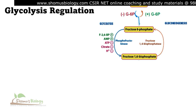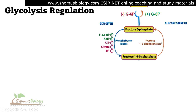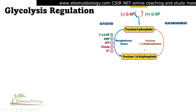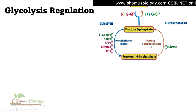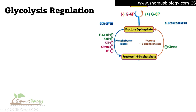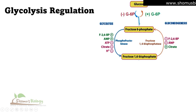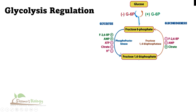On the gluconeogenesis side, the conversion from fructose-1,6-bisphosphate to fructose-6-phosphate is done by fructose-1,6-bisphosphatase. This enzyme can be positively influenced by citrate, as in gluconeogenesis citrate becomes a substrate. AMP negatively influences, and fructose-2,6-bisphosphate negatively influences fructose-1,6-bisphosphatase — essentially the reversal of the glycolytic regulation. The substrate in glycolysis becomes the product in gluconeogenesis and vice versa.